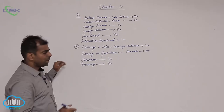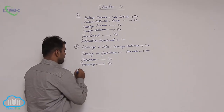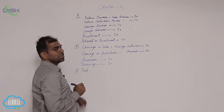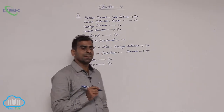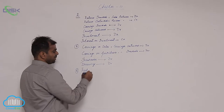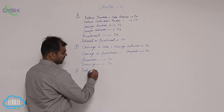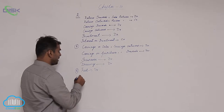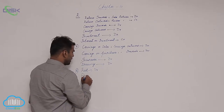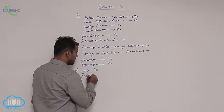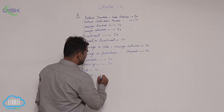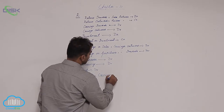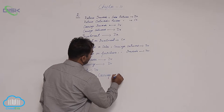Moving on to the fourth problem, we have fuel. Fuel is the material you use to generate power, so it represents an expense, therefore debit balance. Then in the same problem you have freight, which is nothing but carriage inward, which is an expense, therefore debit balance.